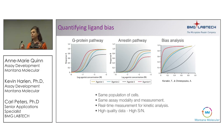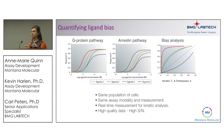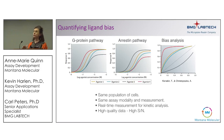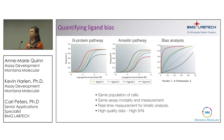To quantify biased agonism, you need to measure both pathways in the same population of cells, because that's how you make valid comparisons. Another key aspect is that you want to use the same assay modality — you don't want an endpoint assay for one pathway and a kinetic assay for the other, because it makes it very difficult to compare results. This talk is about how to make those measurements and use your BMG plate reader to do that.